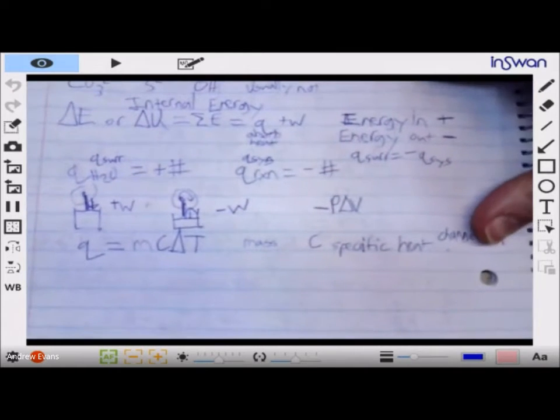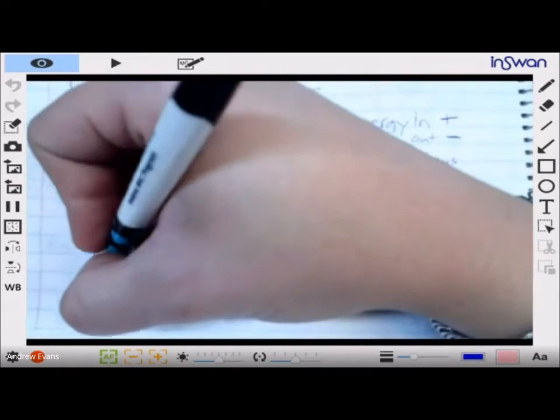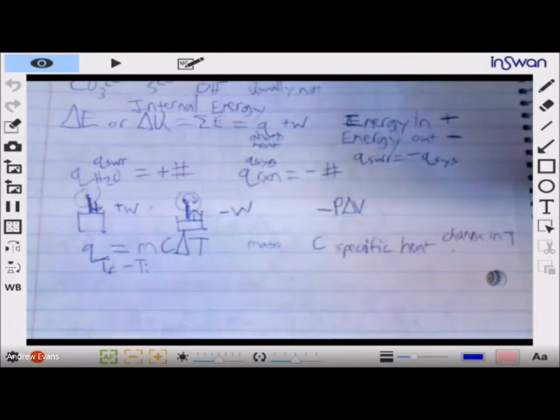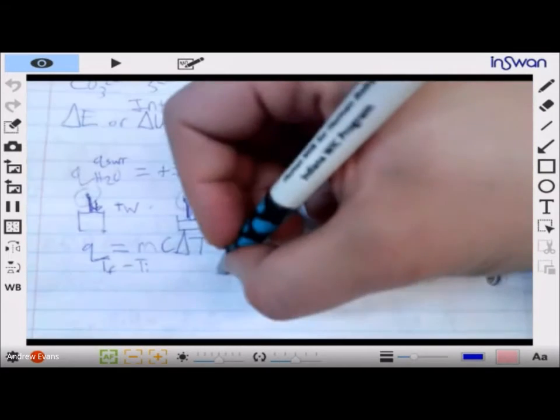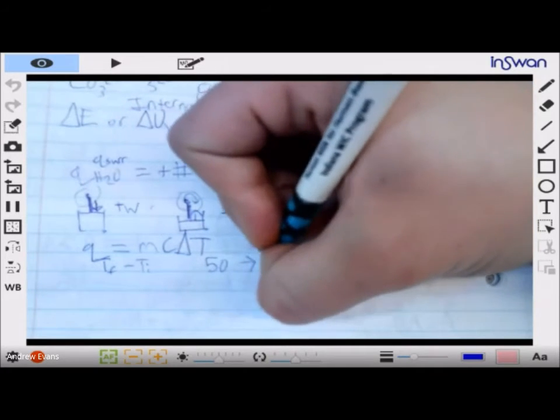Now here's one of the beauties here: when we're trying to figure out the sign of q, as long as you say T final minus T initial, we're going to get the correct sign of q. So if I said I went from 50 degrees to 20 degrees...